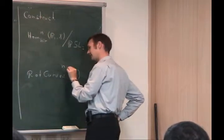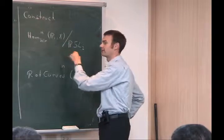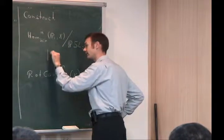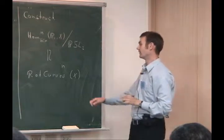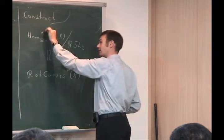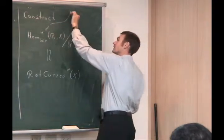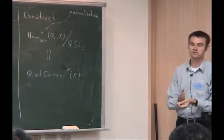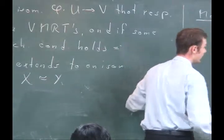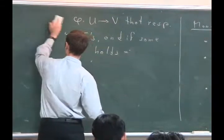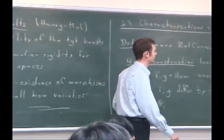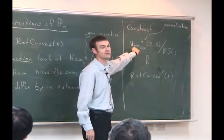Why would anybody want to do this? A priori it may not make things easier, but what we have effectively won is a very good understanding of the tangent space of the Hom scheme. Here is a fact: if F is a morphism in Hom(P1, X), then the tangent space of the Hom scheme at the point F is nothing but the space of sections on P1 in the pullback of the tangent bundle — provided X is a manifold, i.e., smooth.